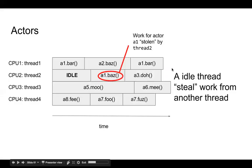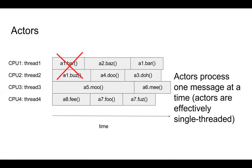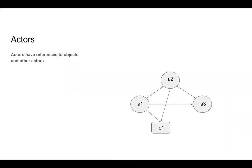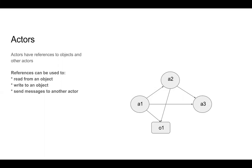Actors can process one message at a time — you can't have two behaviors processing two different messages for the same actor simultaneously. Actors are effectively single threaded. Actors have references to objects and to other actors. Things starting with A are actors, things starting with O are objects. Actor A1 has references to A2, A3, and object one; A2 has references to A3 and object one; A3 has no references. References can be used to read data, write to an object, or send messages to another actor.